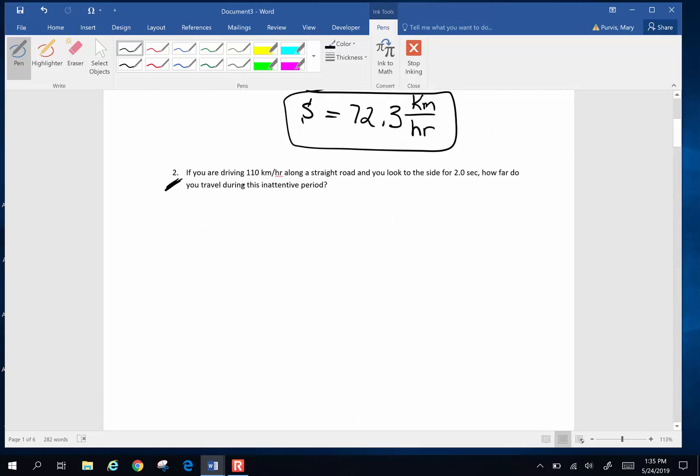Problem number two: You are driving 110 kilometers per hour along a straight road and you look to the side for two seconds. How far did you travel during this inattentive period of driving? Let's write down what we know. 110 kilometers per hour, that is my velocity. I look to the side for two seconds. Seconds happen to be a unit of time, 2.0 seconds. How far do I travel? Far is distance or displacement, so I'm looking for my distance x.